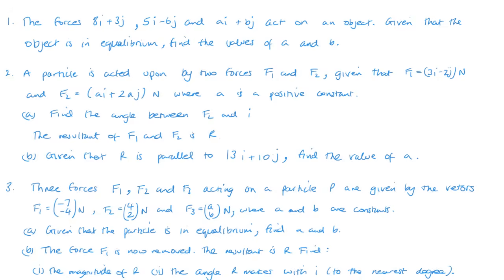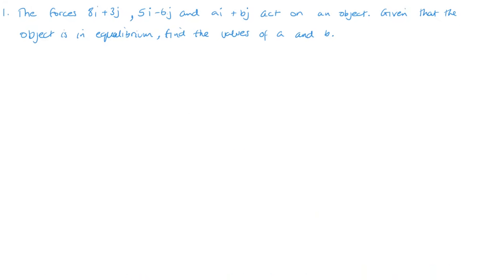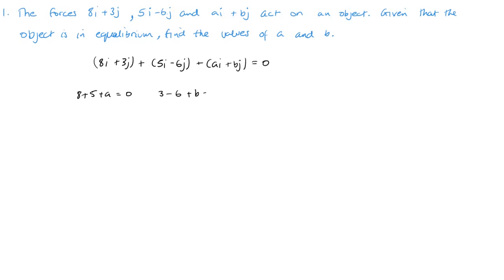Welcome back. For question one: the three forces 8i plus 3j, 5i minus 6j, and ai plus bj are in equilibrium, so they total zero. Therefore eight plus five plus a equals zero, and three minus six plus b equals zero. So a equals minus 13 and b equals plus three.